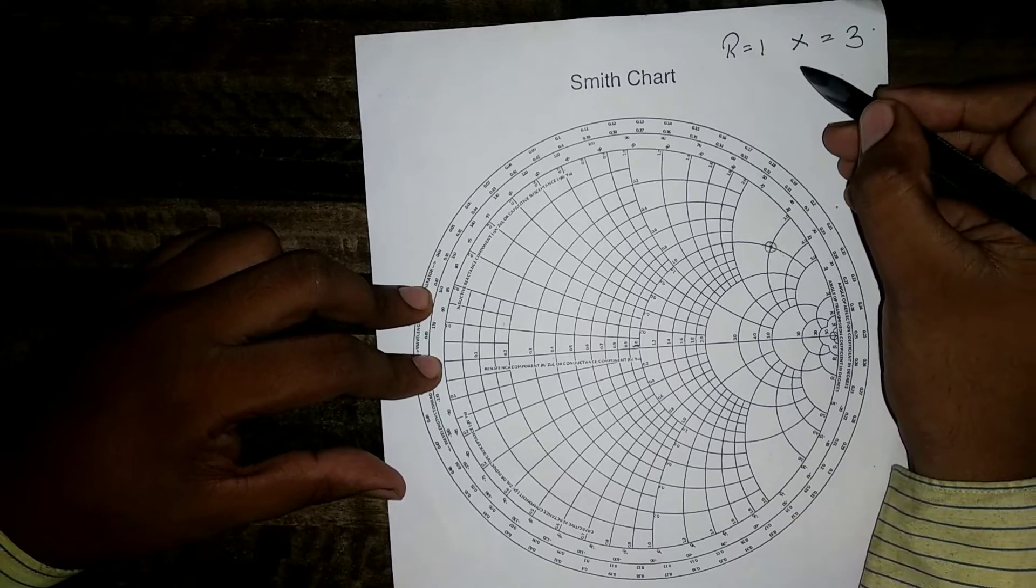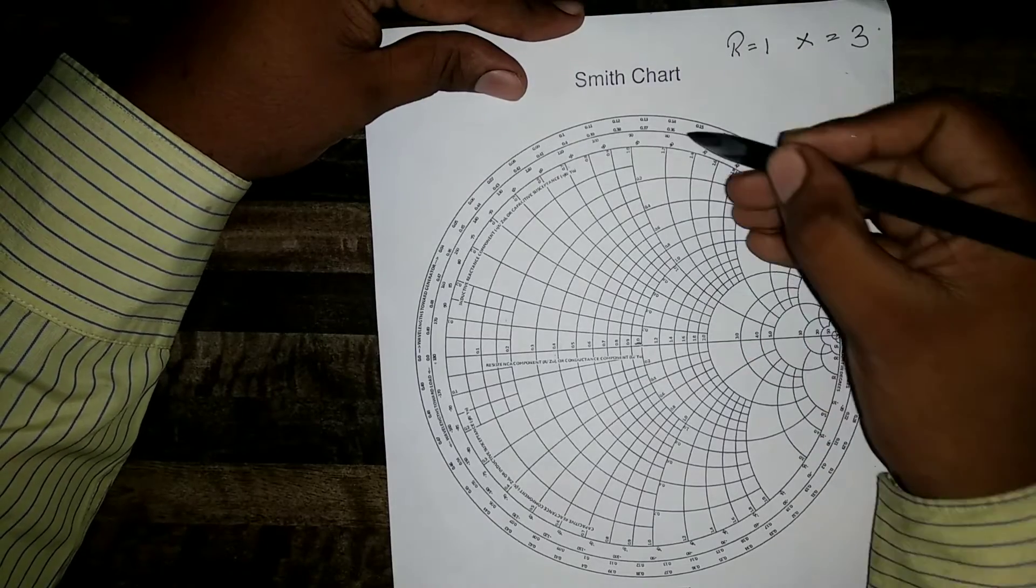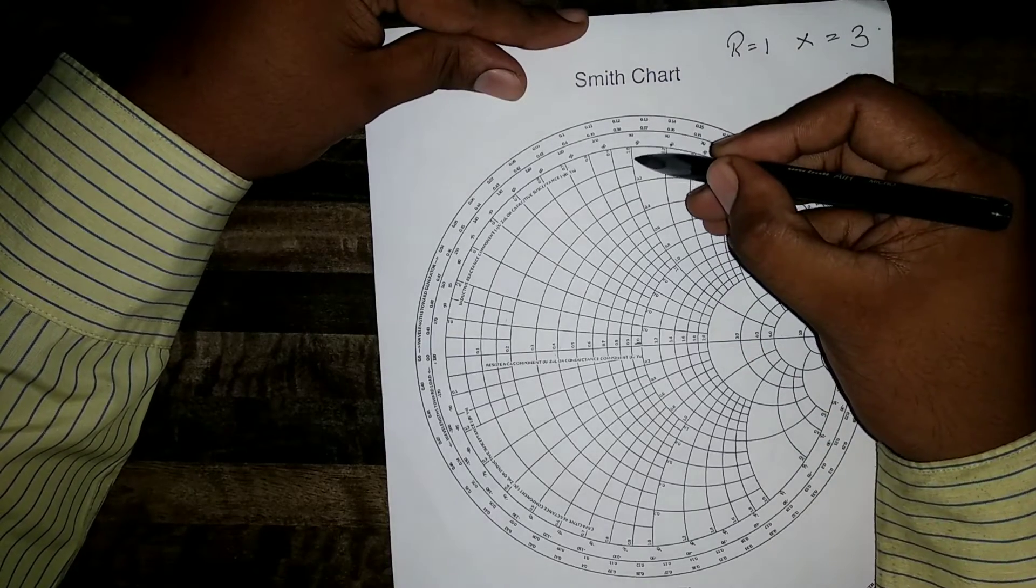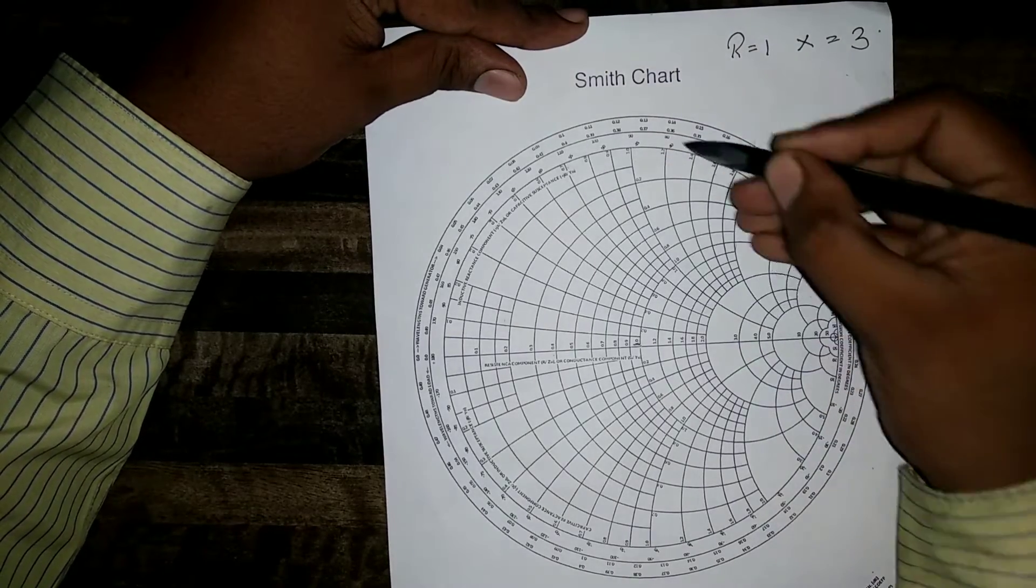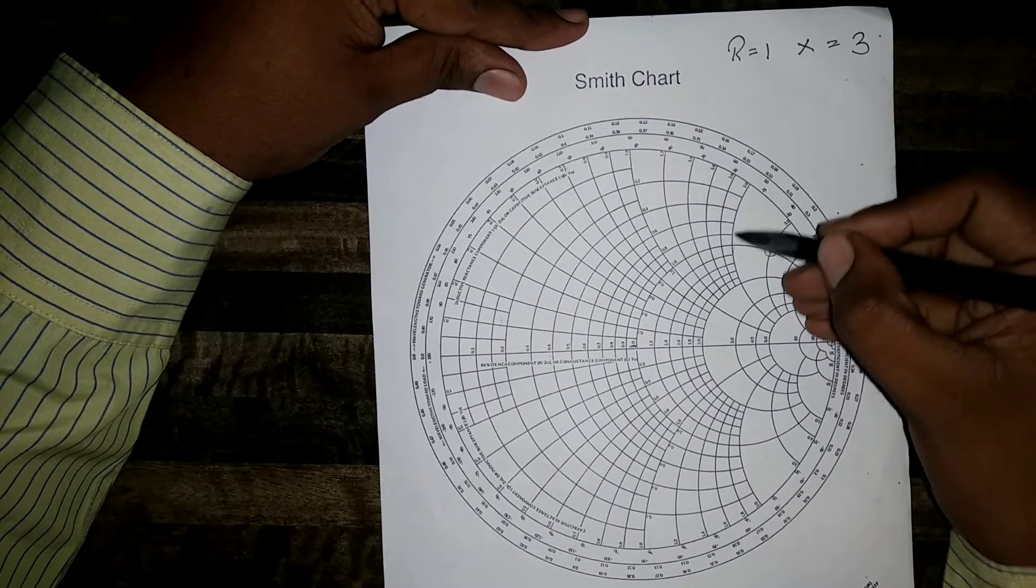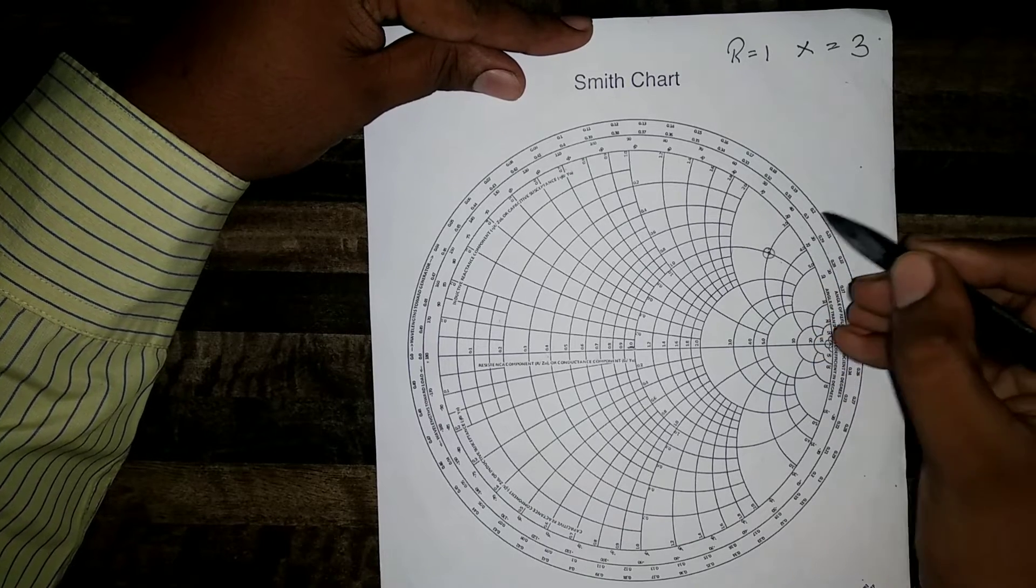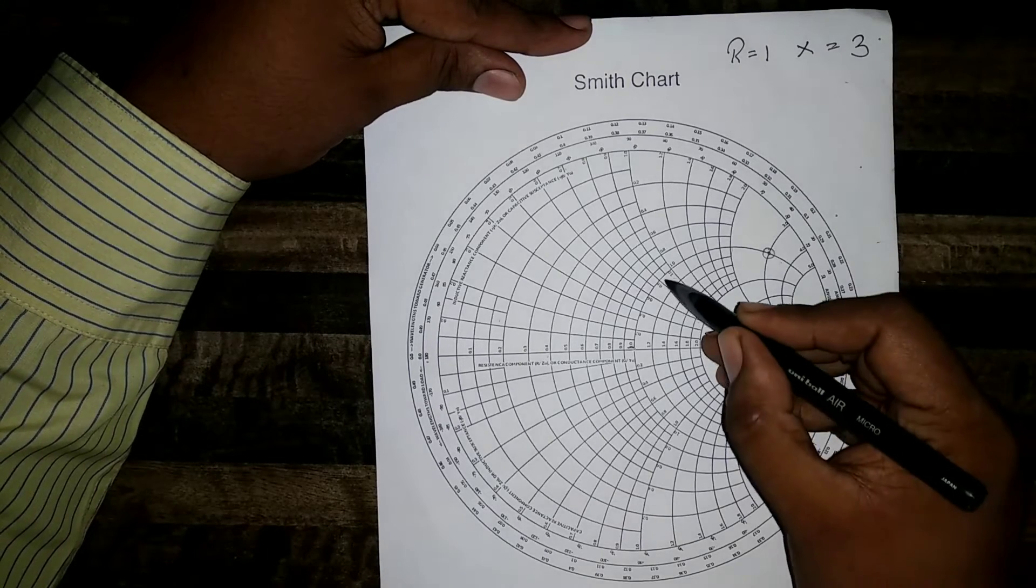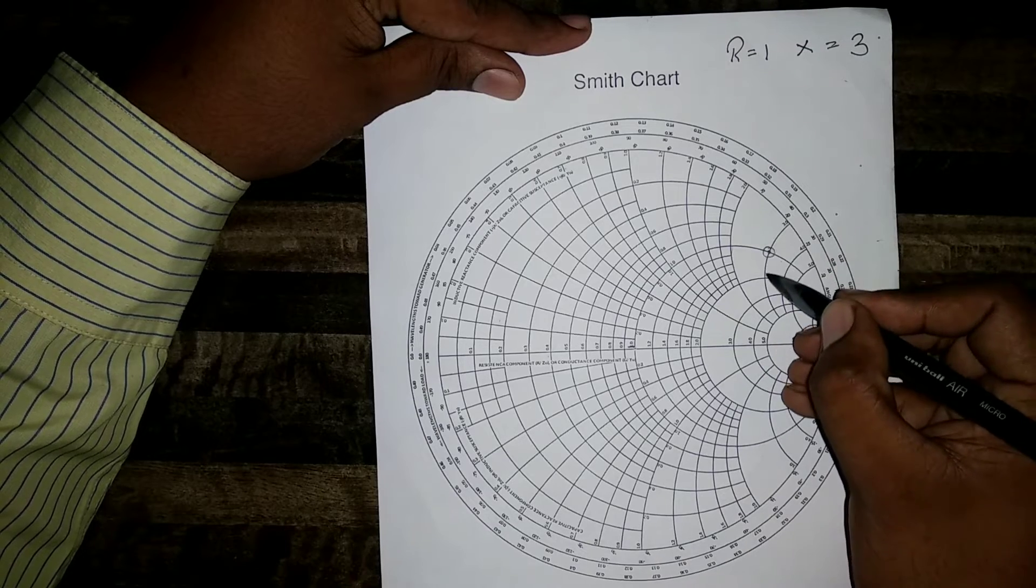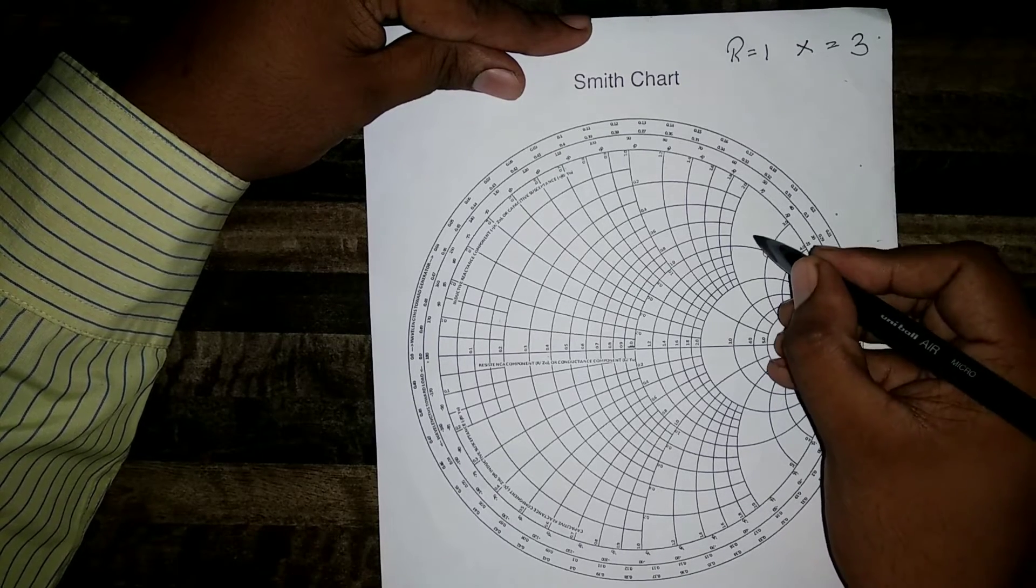Second, X is given X equals to 3. So these are the arcs, X arcs. This arc center arc is X equal to 1 arc. This is 1.2, 1.4, 1.6. This is 2, X equal to 3. So I will be getting my point on this X equal to 3. Now this R equal to 1 and X equal to 3 both are crossing at this point. Therefore, this point is my ZL.